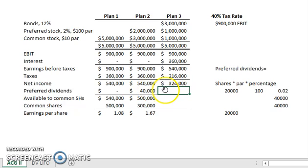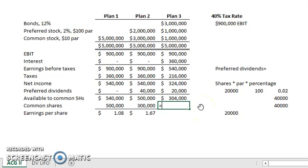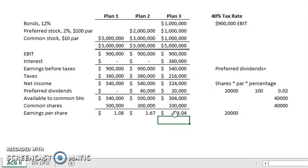For preferred dividends in Plan 3, we have 2% times only $1,000,000 in preferred stock, giving us $20,000. Available to common shareholders is $324,000 minus the $20,000 in preferred dividends. Common shares are $1,000,000 divided by $10 par, giving 100,000 shares. Remember: for EPS we divide — we don't subtract. That gives us $3.04 for our Earnings Per Share for Plan 3.